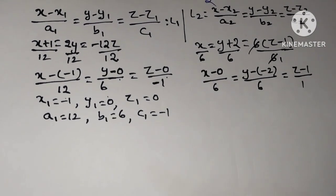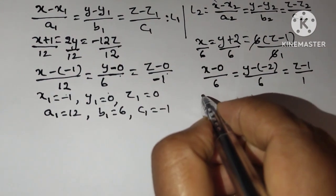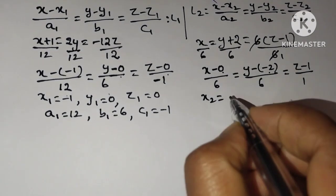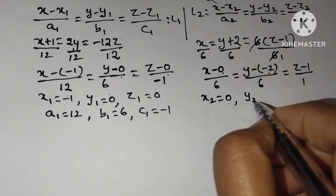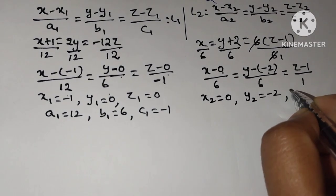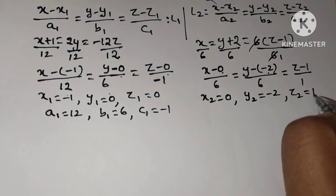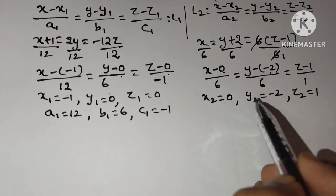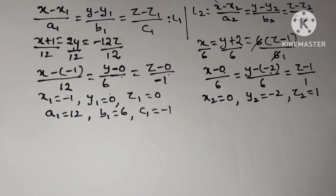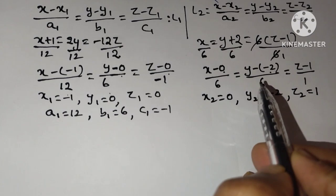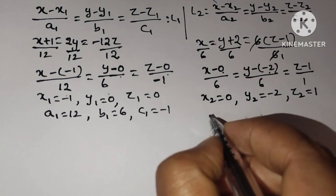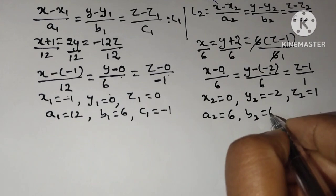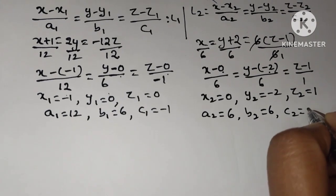Write x2 value. This is x2, y2, z2. x2 is 0, y2 is minus 2, z2 is 1. So we know x2, y2, z2 values. Now a2, b2, c2. a2 is 6, b2 is 6, and c2 is 1.